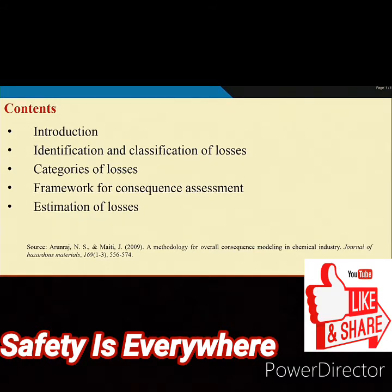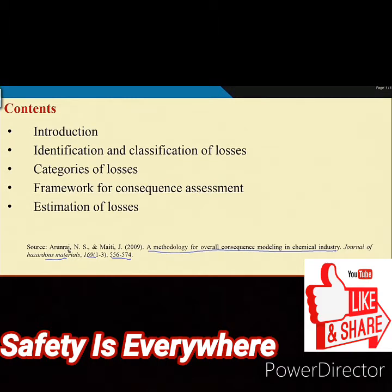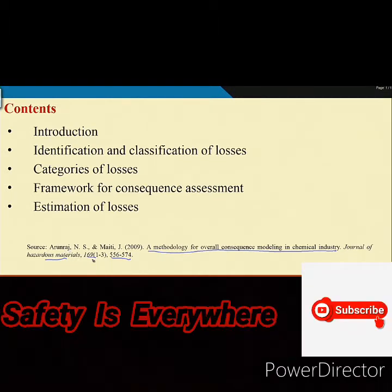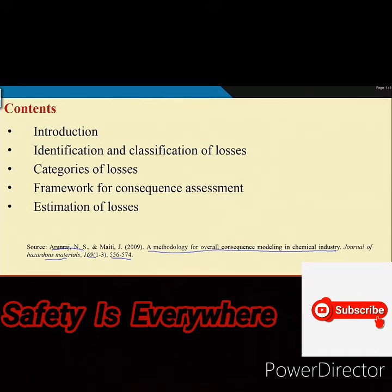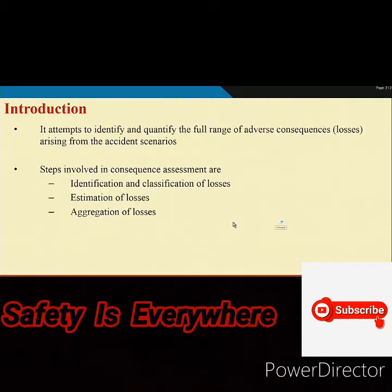All those things are available in the paper 'A Methodology for Overall Consequence Modeling in Chemical Industry,' published in the Journal of Hazardous Materials, volume 169, pages 556 to 574, developed by myself and my PhD student N.S. Arun Raj. There can be variations of this approach, but we have tried to incorporate almost all important loss categories, and we assume this will give you some idea of how to identify, categorize, and estimate losses.